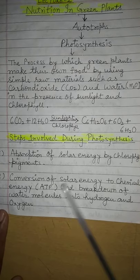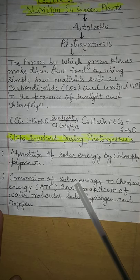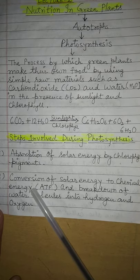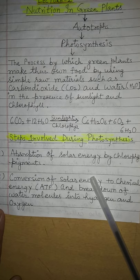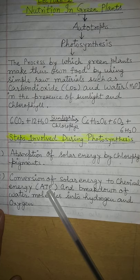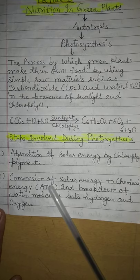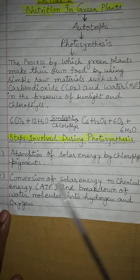In the second step: conversion of solar energy to chemical energy. The absorbed solar energy gets converted into chemical energy. This chemical energy is in the form of ATP — adenosine triphosphate. ATP is a chemical that stores energy, which is why we call it a form of chemical energy. ATP is produced during the steps of photosynthesis.